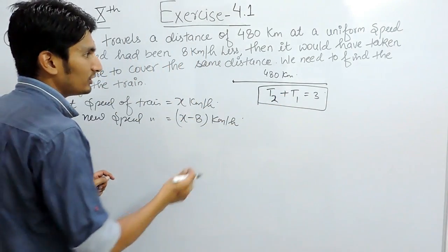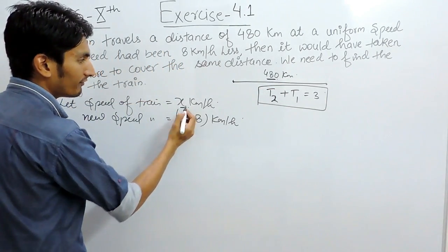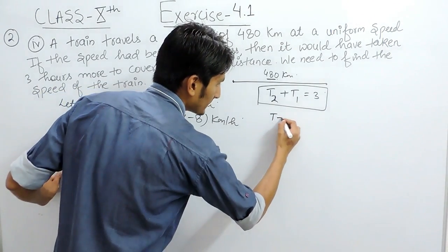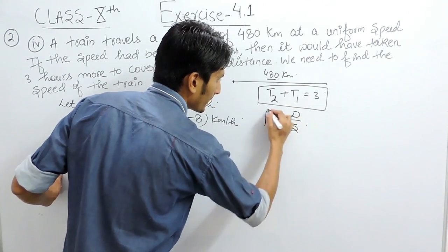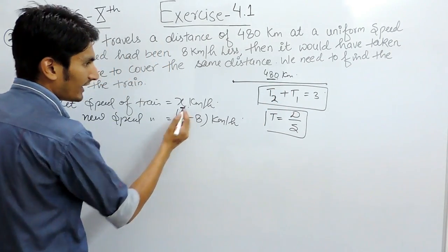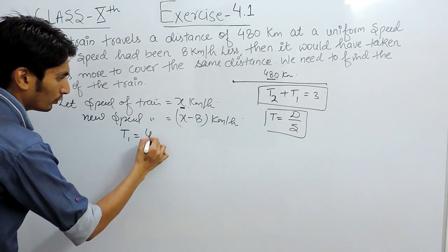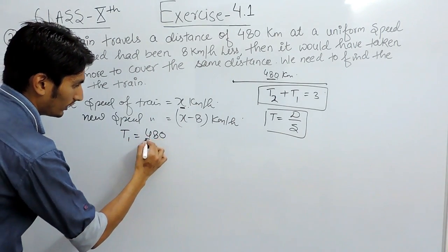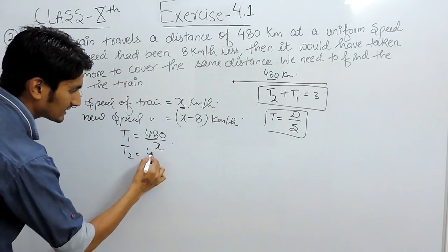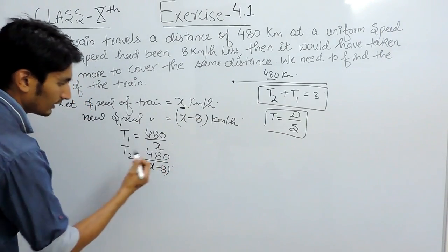When you have to travel 480 km with the speed of x km per hour, the formula for time is distance upon speed. So when you are travelling 480 km with speed x, your time must be 480 upon x. And the second time, when travelling the same distance with speed x minus 8, must be 480 upon x minus 8.